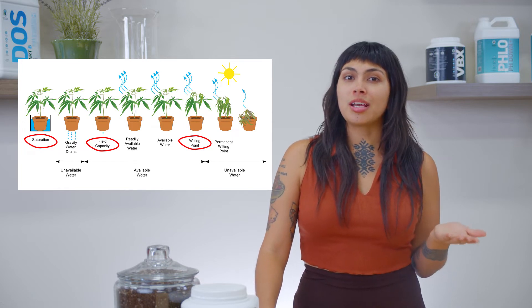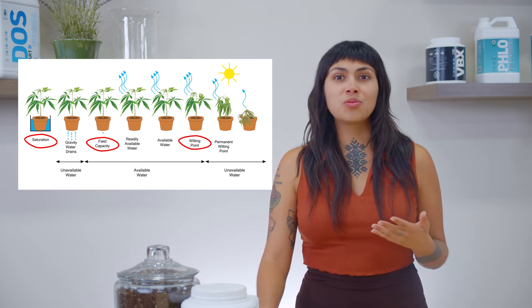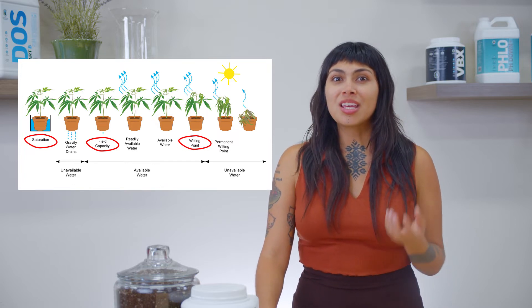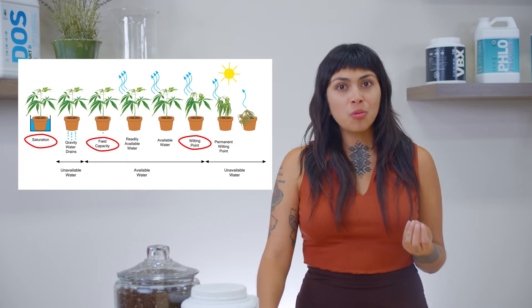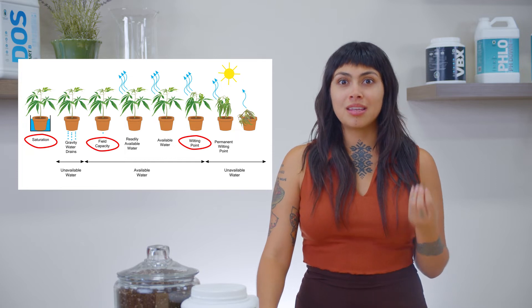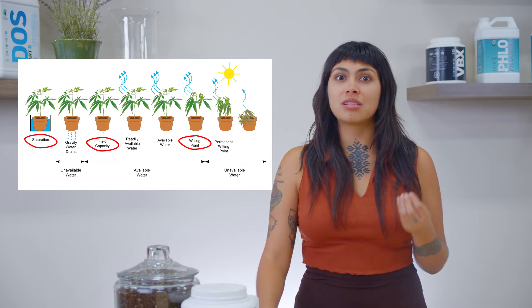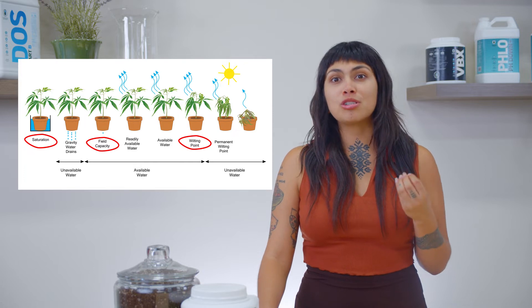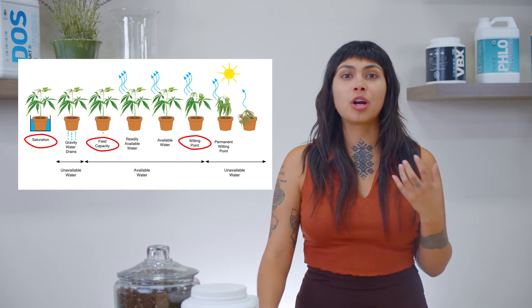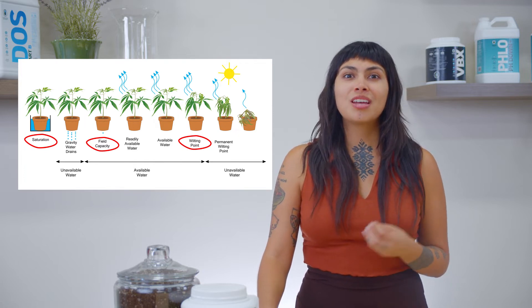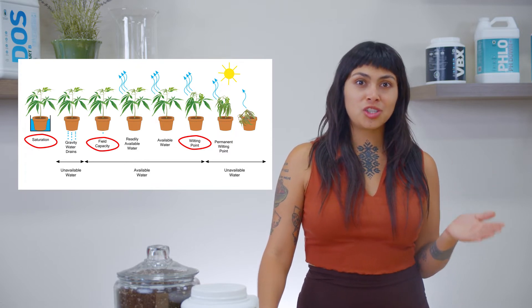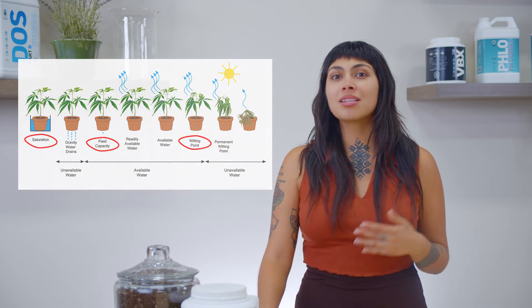Evaporation and capillary action draws water out of the growing media while it is accessible. If no watering events occur, then these processes continue until the substrate reaches the wilting point and there is no longer water available for our plants to feed. Throttling that sweet spot between too much and too little will keep your plants happy and healthy.